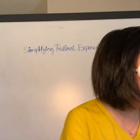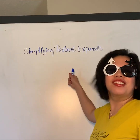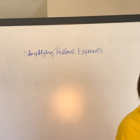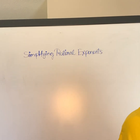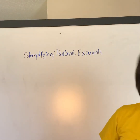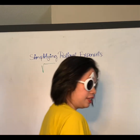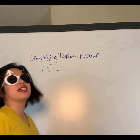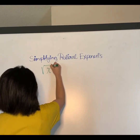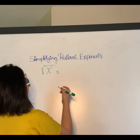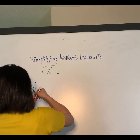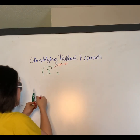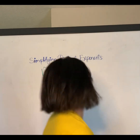Today we're going to do simplifying rational expressions and exponents. Let's start with an example: the square root of x. Remember, the number inside the radical is called the power — here the power is one. The number outside, indicating the type of root, is called the root.